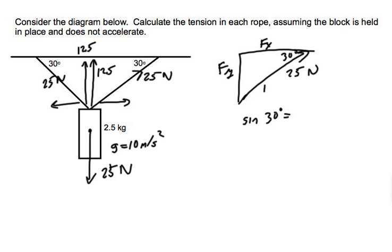So the sine of 30 degrees equals opposite, Fy, over the hypotenuse, 25. So that means the force in the y direction, Fy, equals 25 times the sine of 30 degrees.